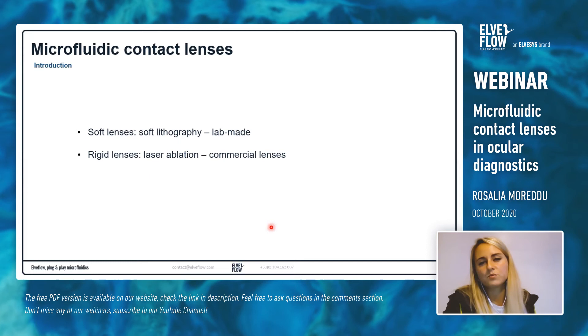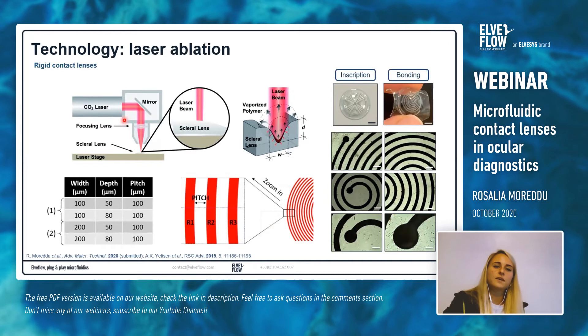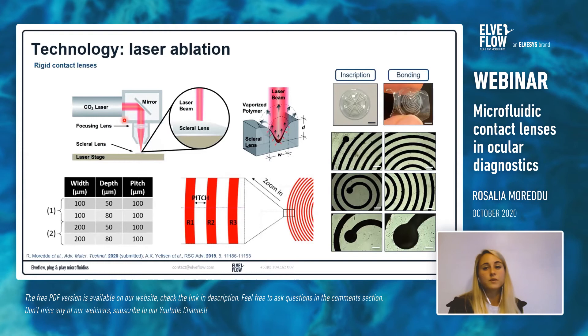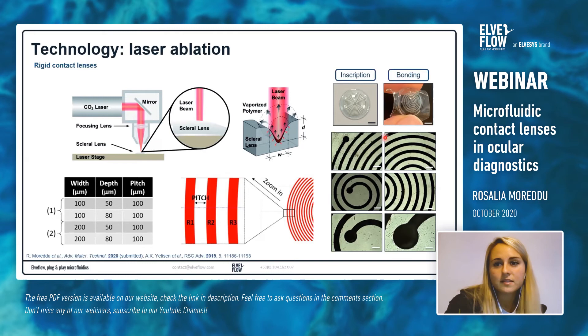Moving to rigid lenses, the main technology is laser ablation — a well-known technology that uses a laser to etch away material from a surface. There are different types of lasers: CO2 laser, UV laser, femtosecond laser, and others, which differ in beam spot size and minimum achievable resolution. They all share the same workflow: designing a specific pattern on design software and then printing it onto the lens. Here we can see a spiral microchannel obtained by a femtosecond laser, with a minimum feature width of 100 micrometers, allowing fabrication of clean channels and structures.